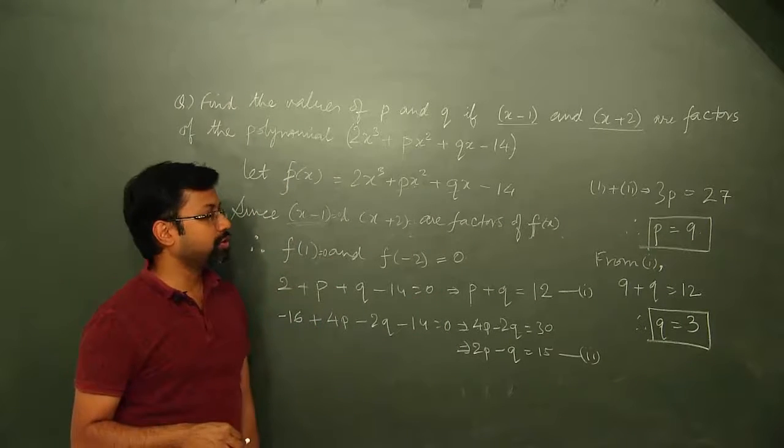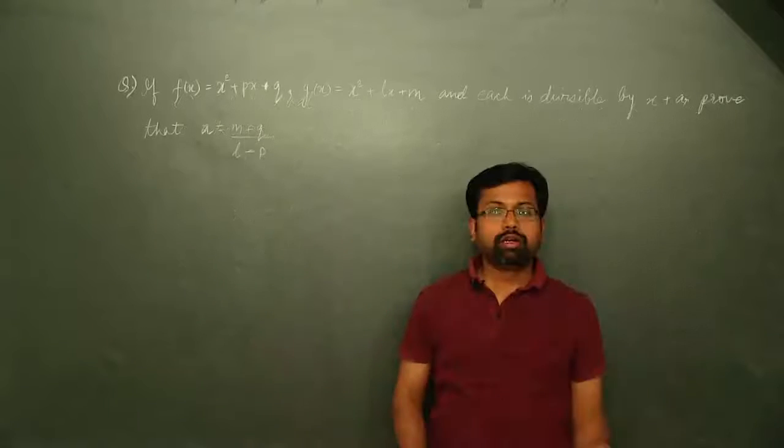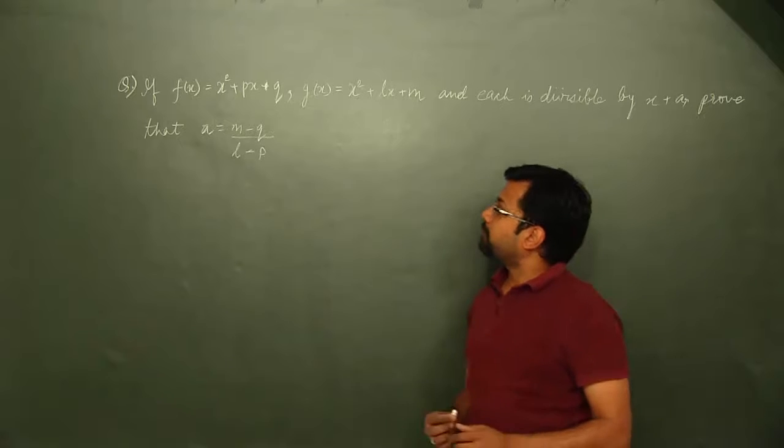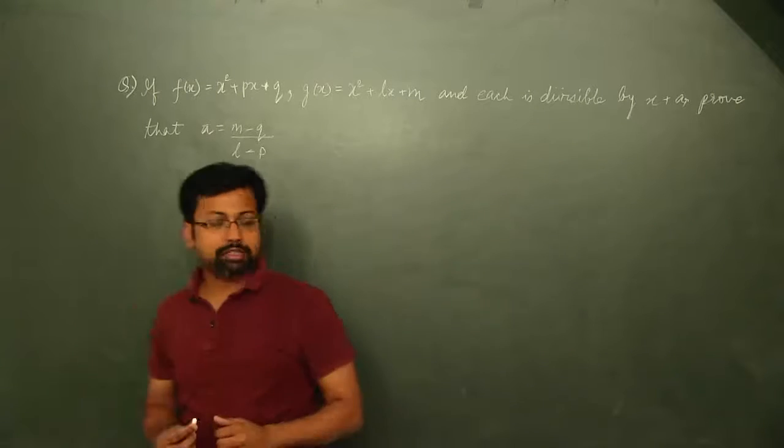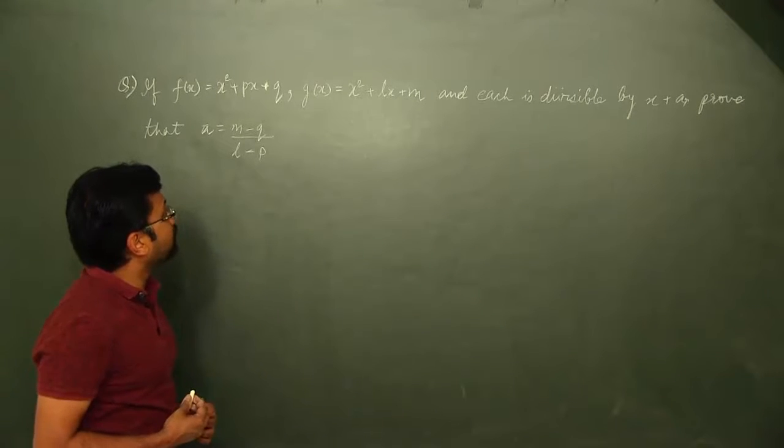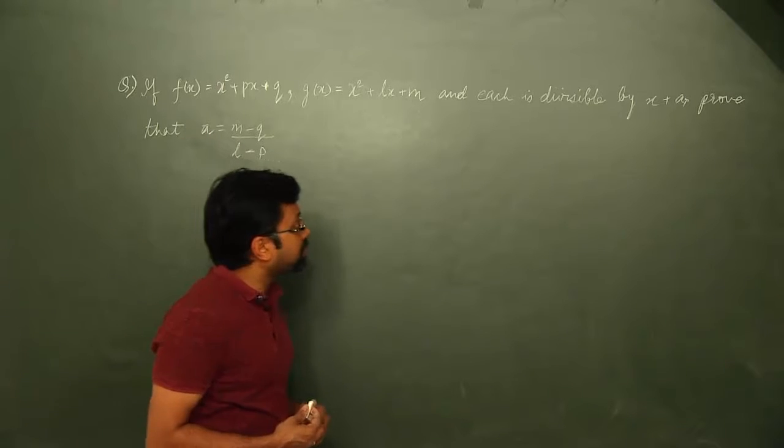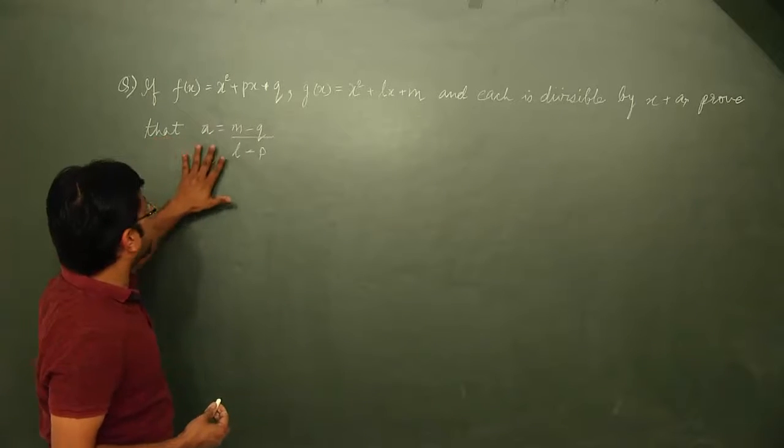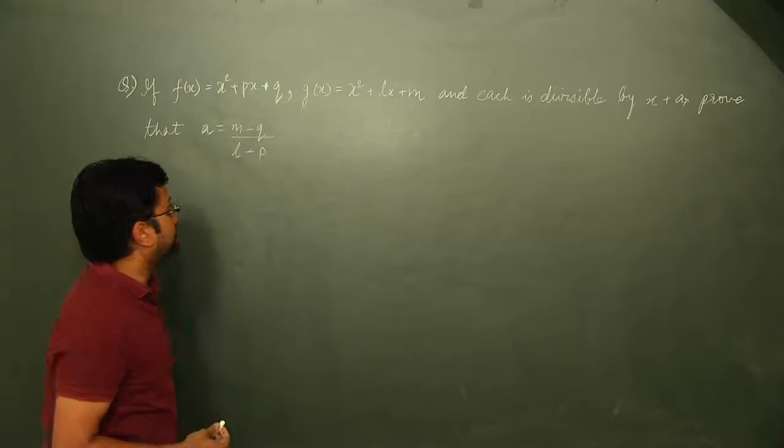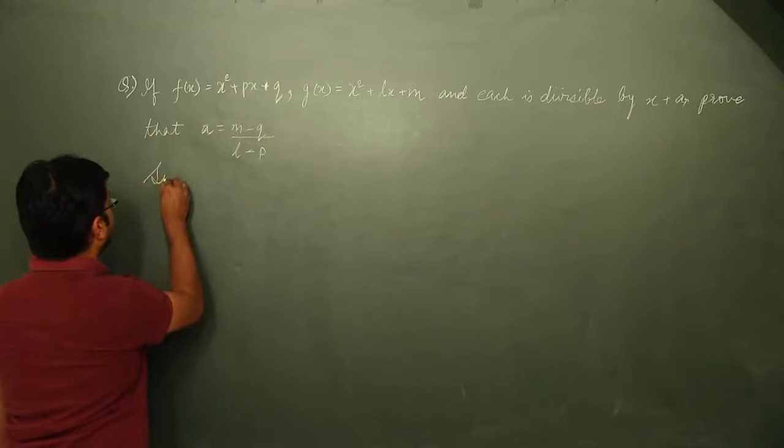This question can be solved using the factor theorem. Now, let's take up another question. It says if f(x) is x squared plus px plus q and g(x) equals x squared plus lx plus m, and both of them are divisible by x plus a, we have to prove that a equals m minus q by l minus p.